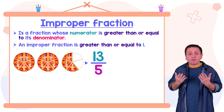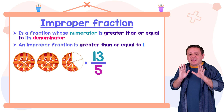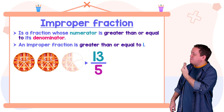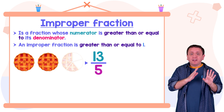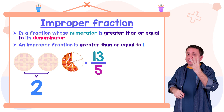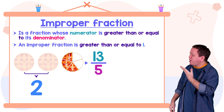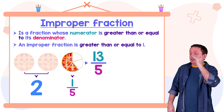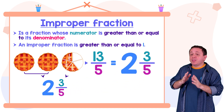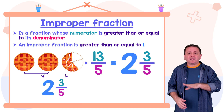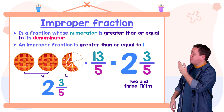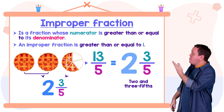Remember that an improper fraction can be written as a mixed number or a whole number. So now we're going to rewrite our improper fraction thirteen fifths as a mixed number. We took the first two pies completely — two whole pies. And we also have a little of the third pie: one fifth, two fifths, and three fifths. So we have two wholes and three fifths. Our improper fraction thirteen fifths is equal to the mixed number two and three fifths. A mixed number contains a whole number and a fraction.